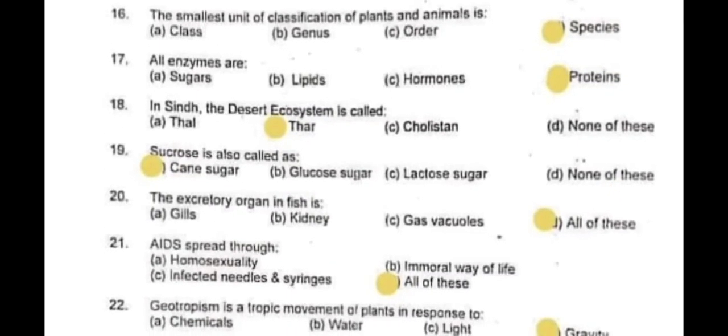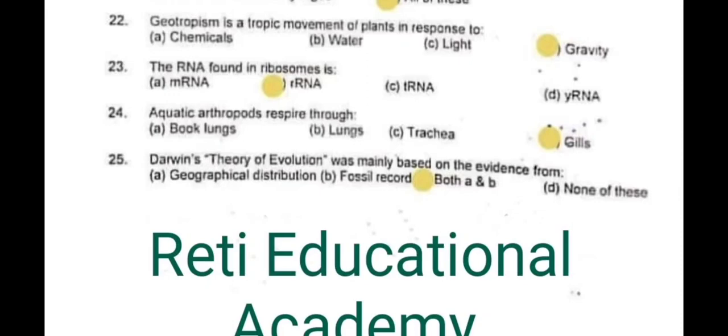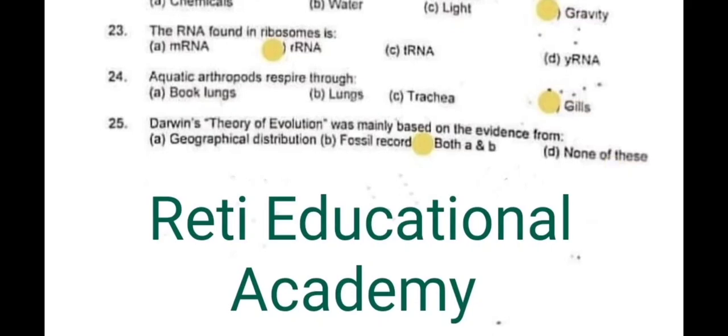Question 22: Geotropism is a tropic movement of plants in response to D – Gravity. Question 23: The RNA found in ribosomes is rRNA. Question 24: Aquatic arthropods respire through D – Gills. Question 25: Darwin's theory of evolution was mainly based on the evidences from A and B – Geographical distribution and fossil records.